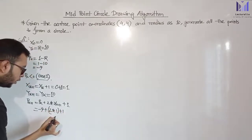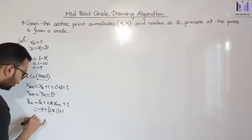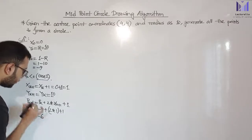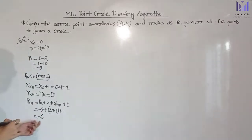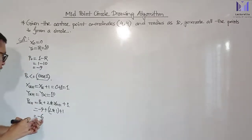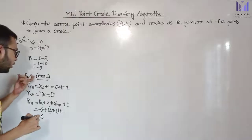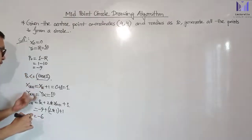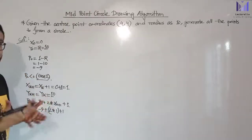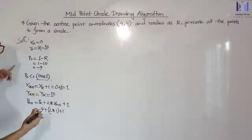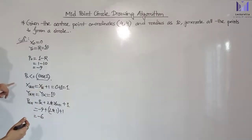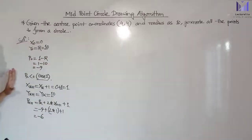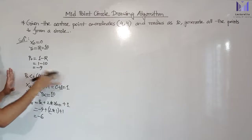2 plus 1 is 3, minus 9 means minus 6. The next decision parameter will be 0, so we will execute case 1. We will execute case 2. We will execute step 3. We will execute step 1, step 2, step 3. We will execute case 2.